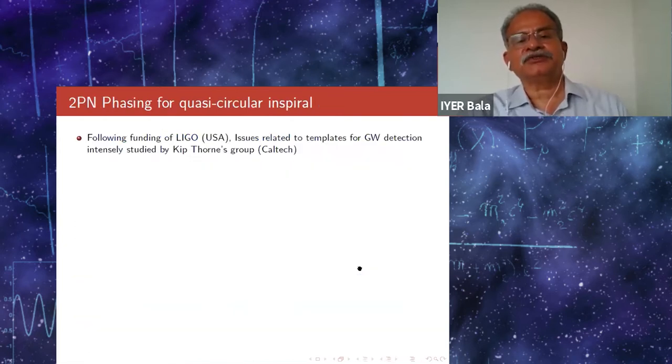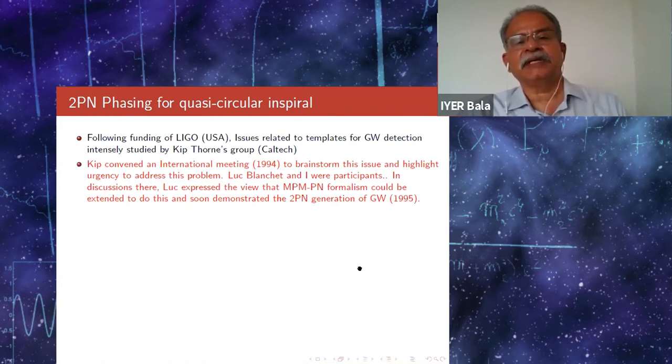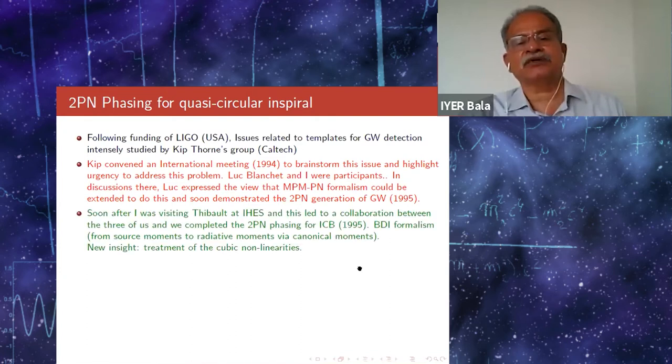Following the funding of LIGO, issues related to templates for gravitational wave detection were intensely investigated by Kip's group at Caltech. Kip convened an international meeting to brainstorm this issue. Luc Blanchet and I were participants, and in the discussions, Luc expressed the view that the MPMPN formalism could be extended to do this and soon demonstrated the 2PN generation of gravitational waves. Soon after, I was visiting Thibaut at IHES, and this led to the collaboration between the three of us. We completed the 2PN phasing for inspiraling compact binaries using the BDI formalism, which goes from the source moments to the radiative moments via the canonical moments.